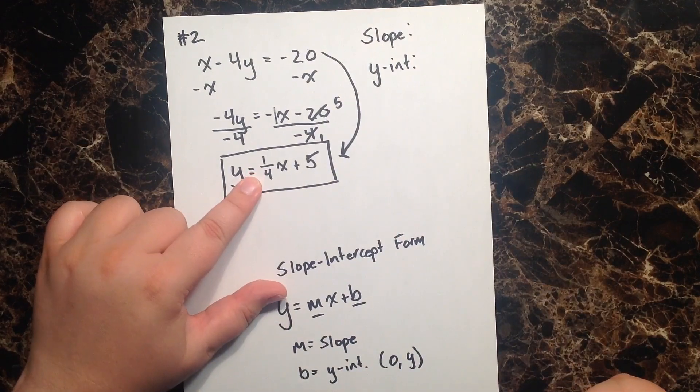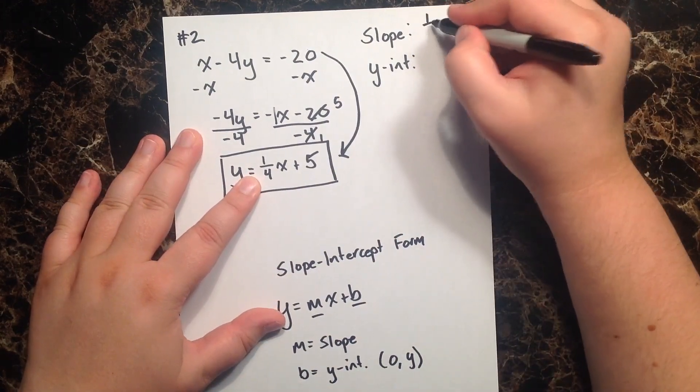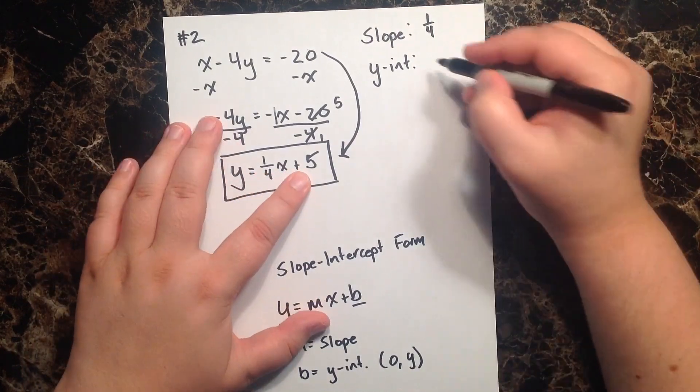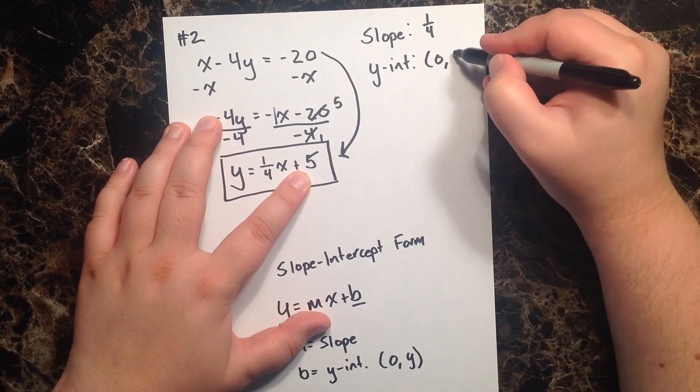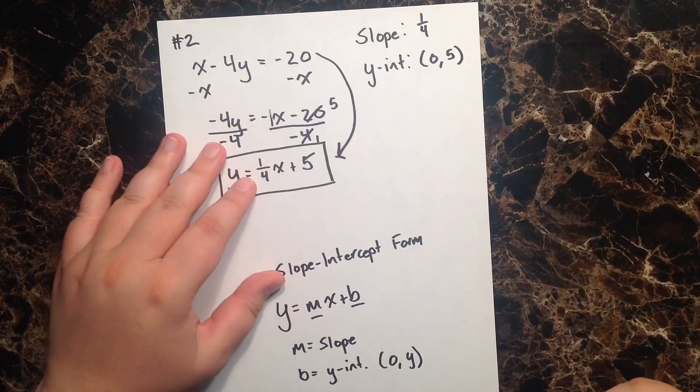and now that my equation has been rewritten into y equals mx plus b, I can easily see that my slope is 1 over 4, and my y-intercept is going to be 0 comma 5.